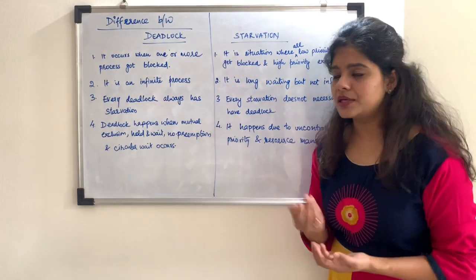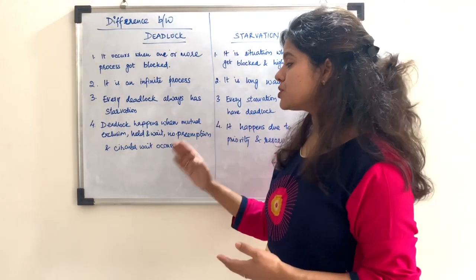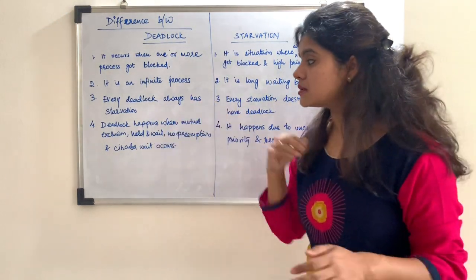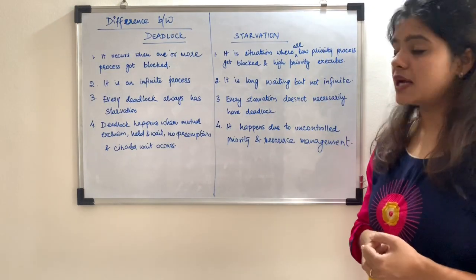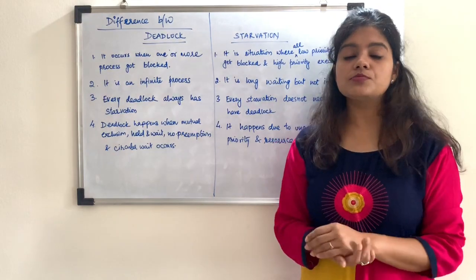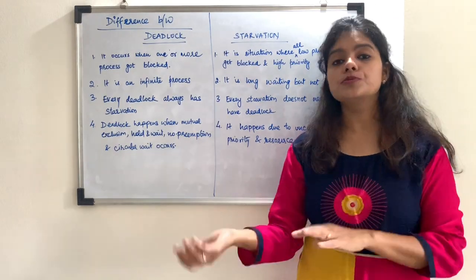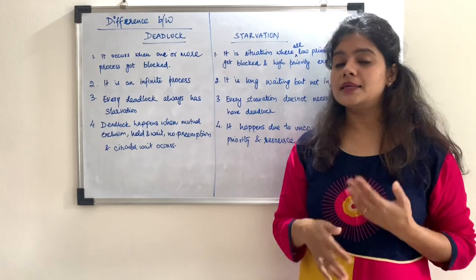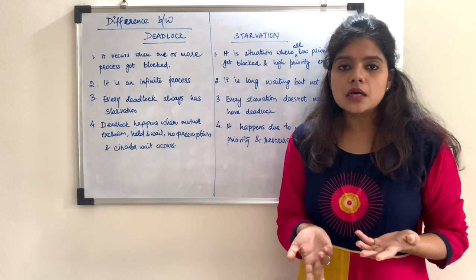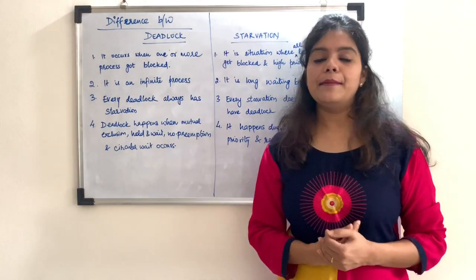The fourth difference is about the causes. When there is a deadlock, it occurs when four conditions are met: mutual exclusion, hold and wait, no preemption, and circular wait. When these four conditions occur together, it leads to deadlock. But starvation happens due to uncontrolled priority and resource management. When resources are being used by many processes and some processes don't get a chance to execute, that is poor or uncontrolled resource management and priority management, which causes starvation.